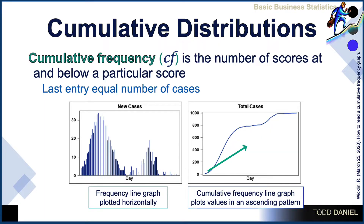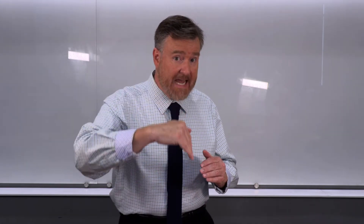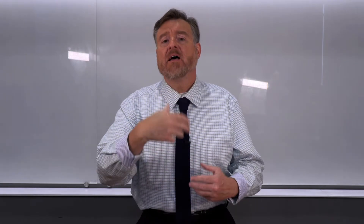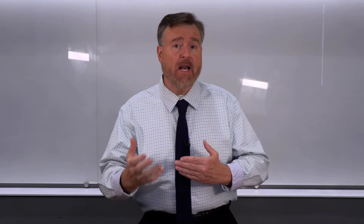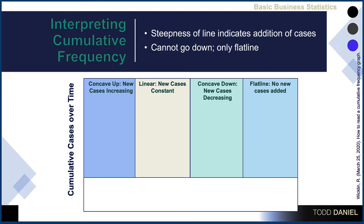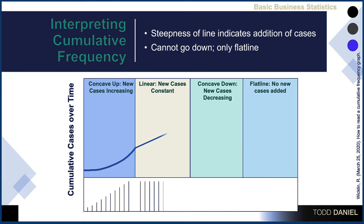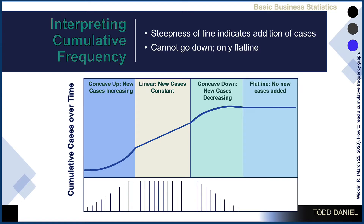The cumulative frequency line graph plots values in an ascending pattern, meaning the cumulative frequency line will never go down — it can only flatline. When new cases are being added at an increasing rate, we see that the cumulative frequency line is concave, going up. The steepness of the line indicates the addition of new cases. When new cases are being added at a constant rate, we will see a straight line. When cases are decreasing, the cumulative frequency will still go up, but by a much smaller margin. And ultimately, when no new cases are added, the cumulative frequency line will flatline.